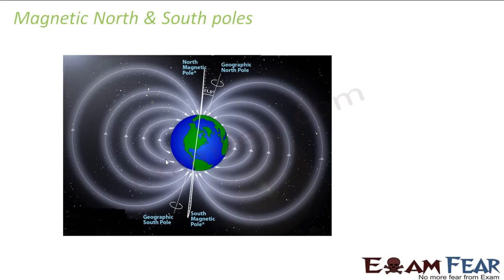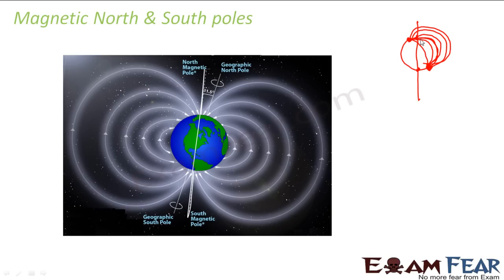The earth's magnetic north and south poles were determined by looking at the pattern of the magnetic field lines. It was observed that the magnetic field lines originated and terminated at two points, whereas the geographic north and south poles were somewhere else. So it was found that in terms of magnetism, the magnetic lines of force originate and terminate at points which do not coincide with the geographic north and south poles. Therefore, magnetic north pole and magnetic south pole were defined separately as the points of origin and termination of the magnetic field lines of the earth.